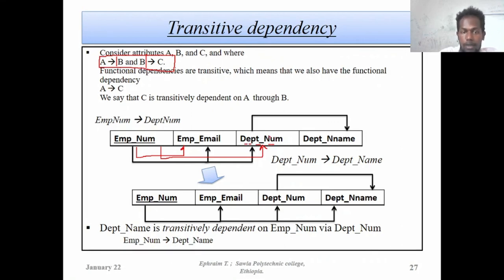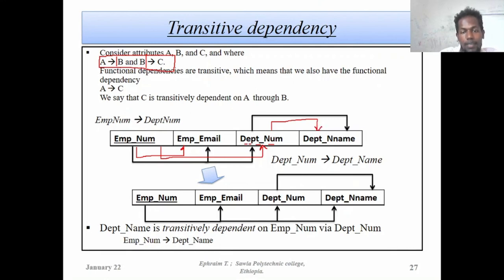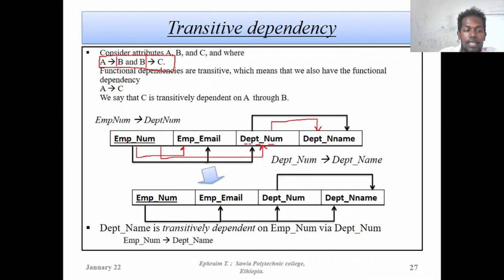Department number is the foreign key of this table, and department number determines its own attribute — department name. Department name is associated with employee number, and department name is the foreign key of this table.